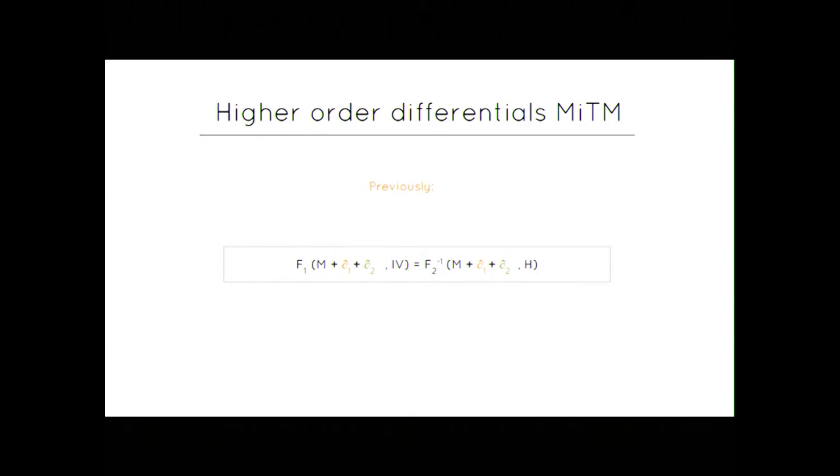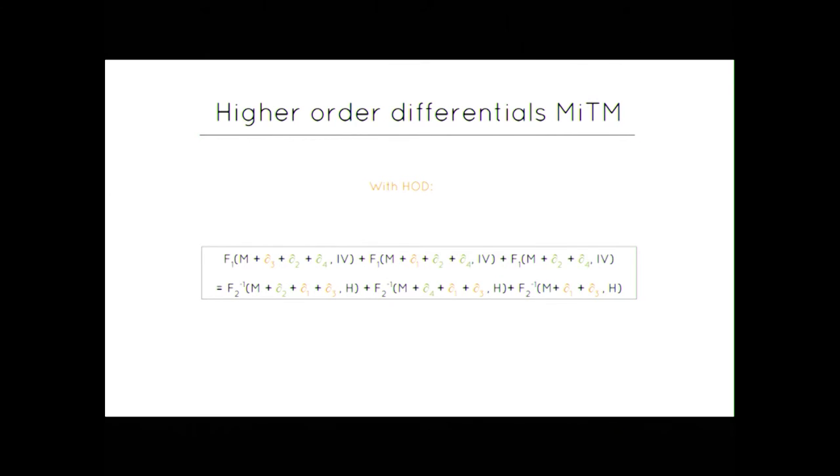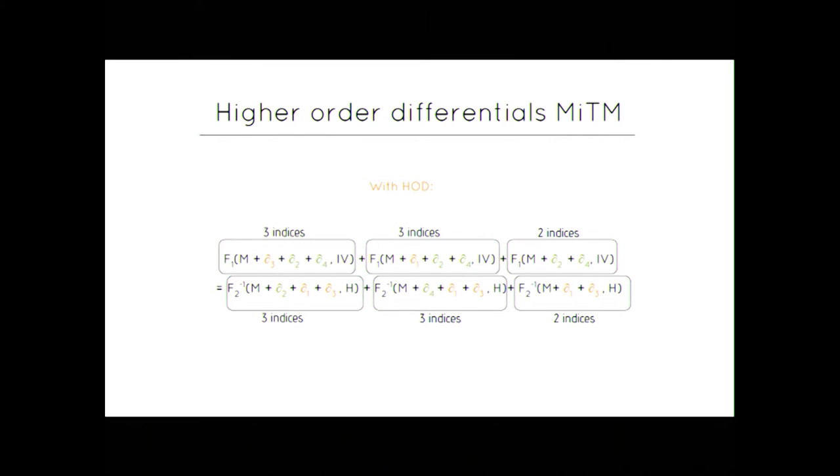And previously when we were asking for the presence of a pre-image we'll say we want f1 of m plus delta 1 plus delta 2 is equal to this quantity. Now we will ask for this equation to be fulfilled and we again use the property imposed on d1, d2, d4, d3, d4 and we will get that kind of equations. And now what we can see is that here this quantity depends on three indices and these two quantities depend on two indices. So we can have a similar algorithm.